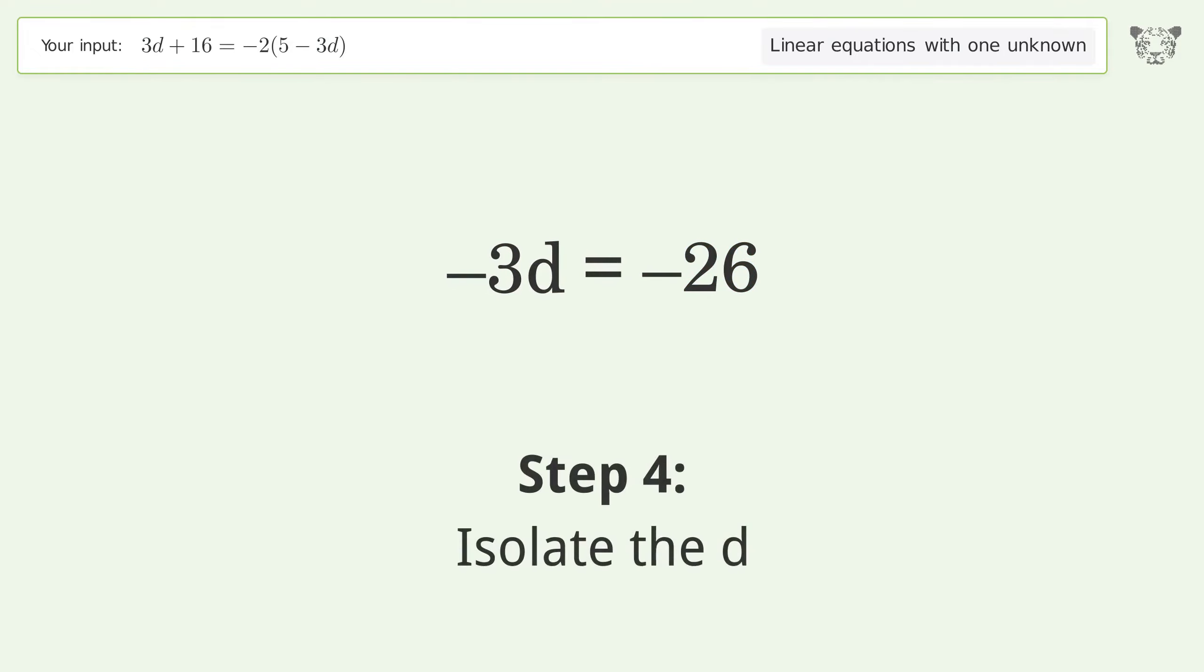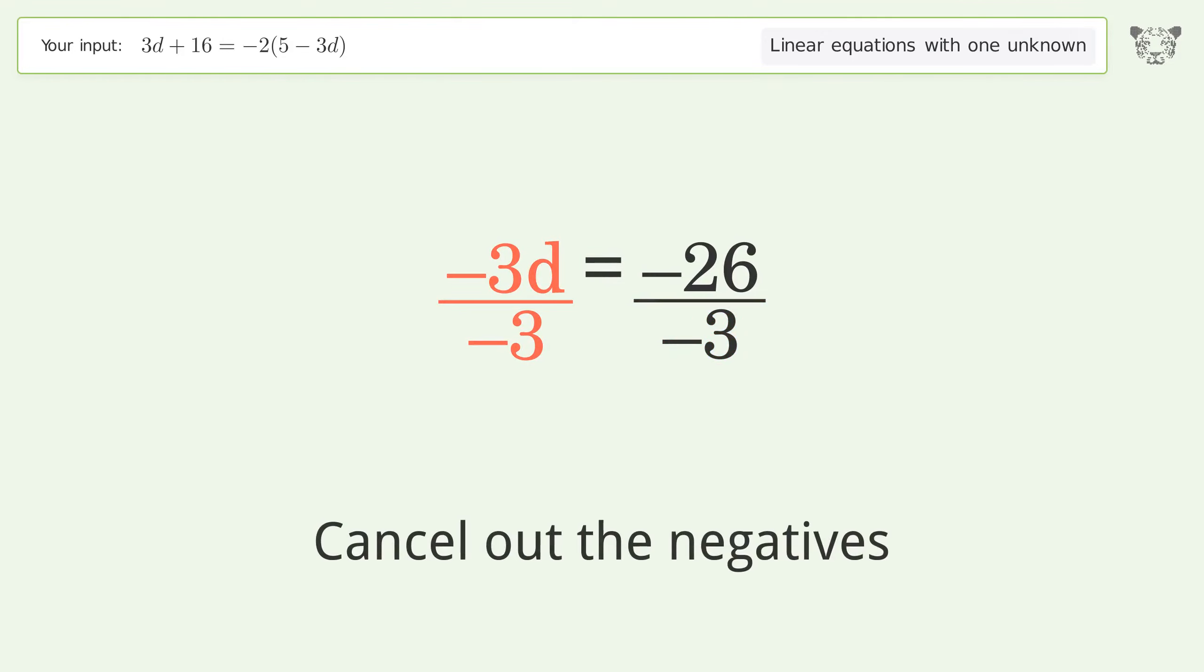Isolate d by dividing both sides by negative 3. Cancel out the negatives and simplify the fraction.